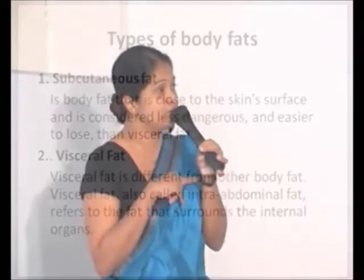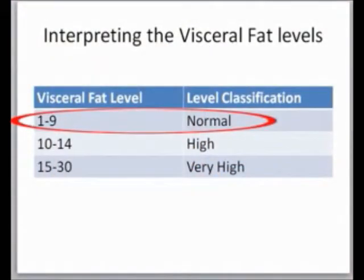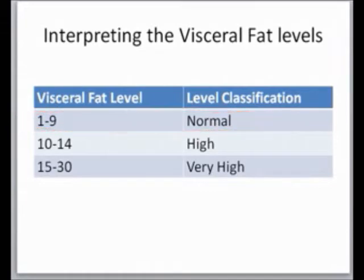Subcutaneous fat can be removed relatively easily, but visceral fat is the dangerous one. If the visceral fat level is very high, we are more liable to develop high cholesterol levels in the blood, and we are more vulnerable to cardiac diseases, strokes, and so on. According to this machine, the healthy visceral fat level is 1 to 9 — that is the normal range; going beyond that means you are increasingly unhealthy.